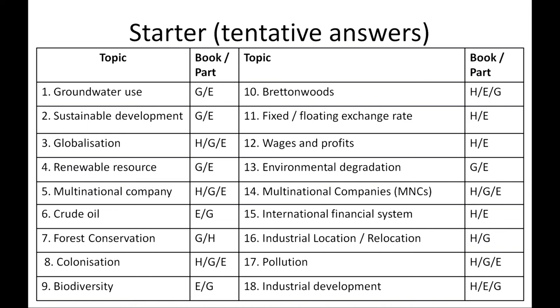Continuing the answers: international financial system (World Bank, IMF) — economics and history; industrial location and relocation — history and geography; pollution — history, economics, and geography; industrial development — history, economics, and geography. As a student, if you pull together all these ideas from different textbooks and organize them coherently in your notes, you will be able to understand social sciences much better.